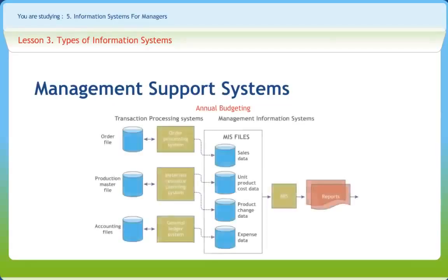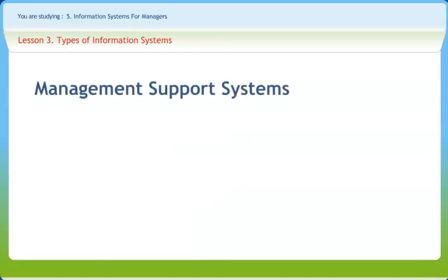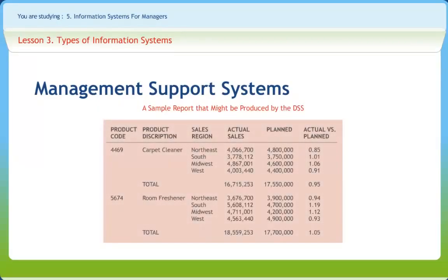The figure shown here illustrates how a management information system obtains data from the organization's TPS and eases the job for annual budgeting. Decision Support Systems are a class of computer-based information systems, including knowledge-based systems, that support decision-making activities. They belong to a multi-disciplinary environment including database research, artificial intelligence, human-computer interaction, simulation methods, software engineering, and telecommunication. In simple terms, DSS takes input volume data, makes interactive processing, and gives decision analysis as output, used by professionals as well as their staff.